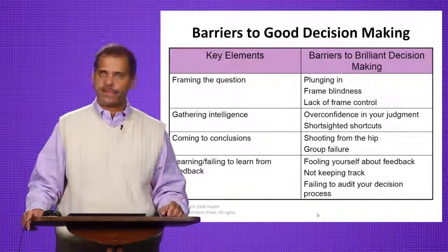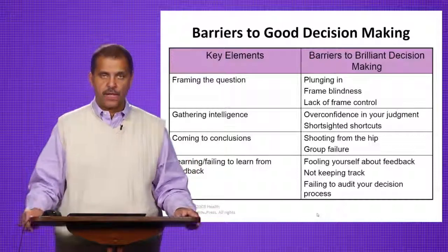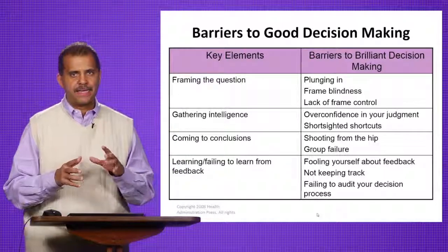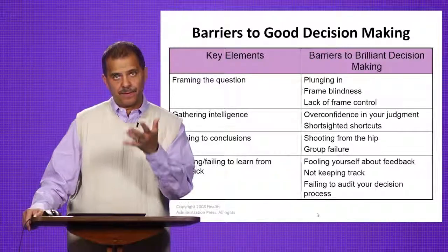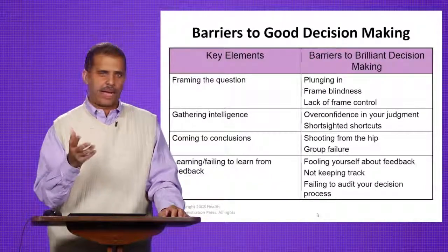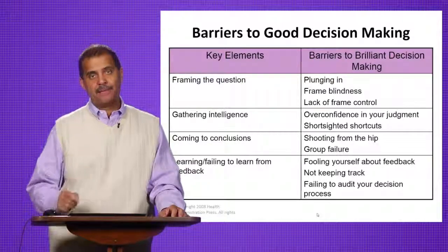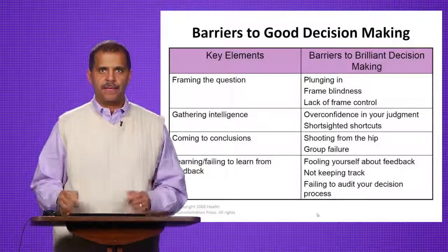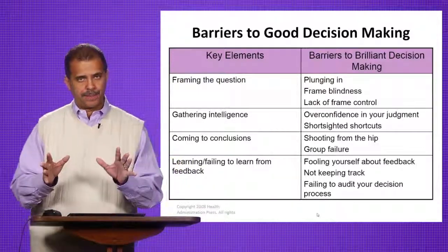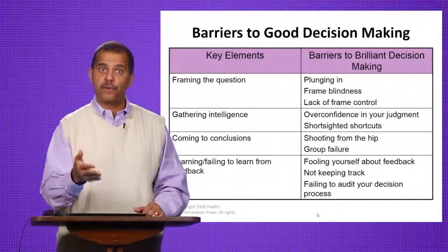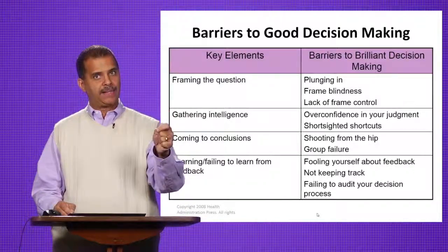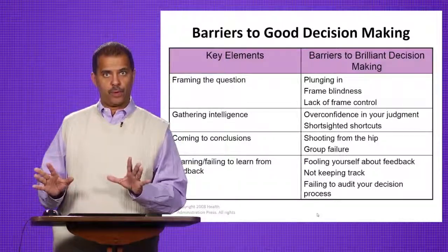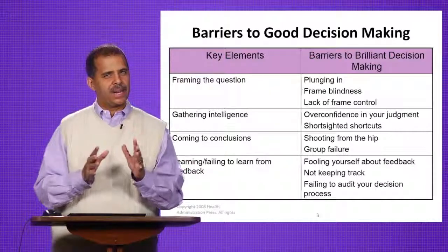We all would like to make very good decisions, but there are some barriers purported in the scientific literature to good decision-making — four of them. The first is around framing the question. Framing means that the way in which you ask a question, you get a different response. For example, a recent survey by Gallup or Pew asked individuals two questions. They said, 'Are you in favor of Obamacare?' and many respondents said no. Then they asked the same individual, 'Are you in favor of the Affordable Care Act?' and they said yes. So it's framing, because the Affordable Care Act equals Obamacare. Be very careful about how you frame things.